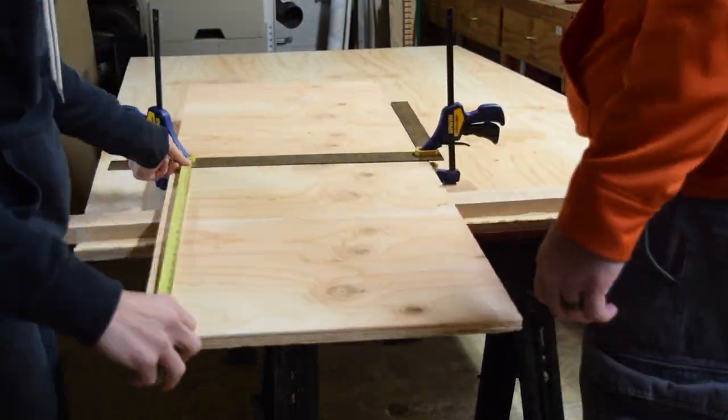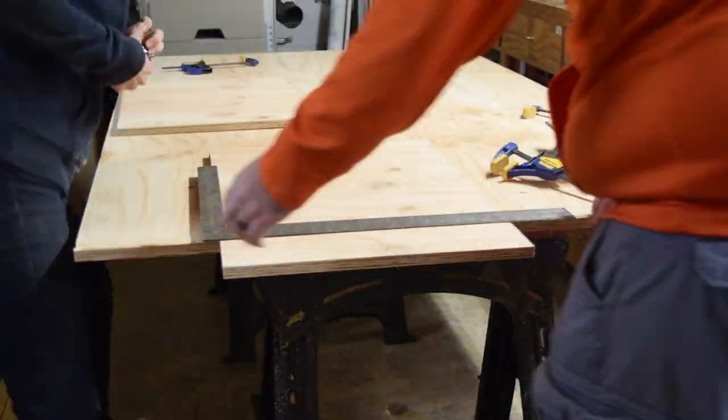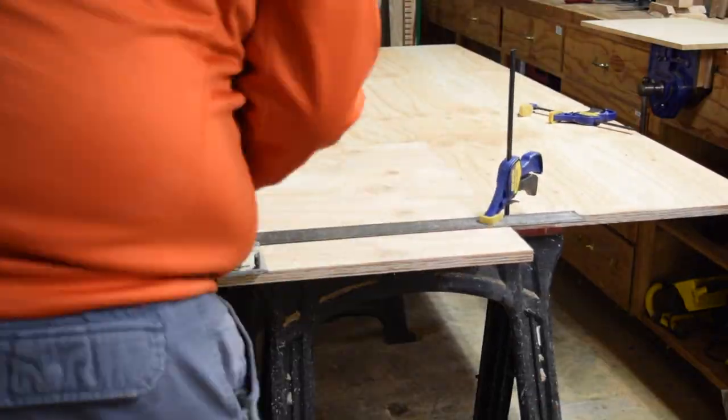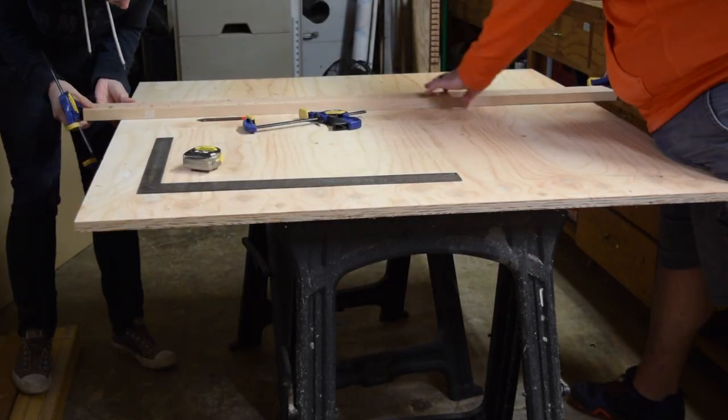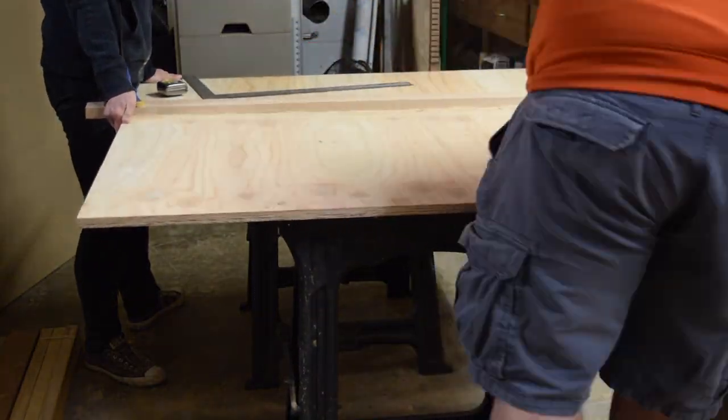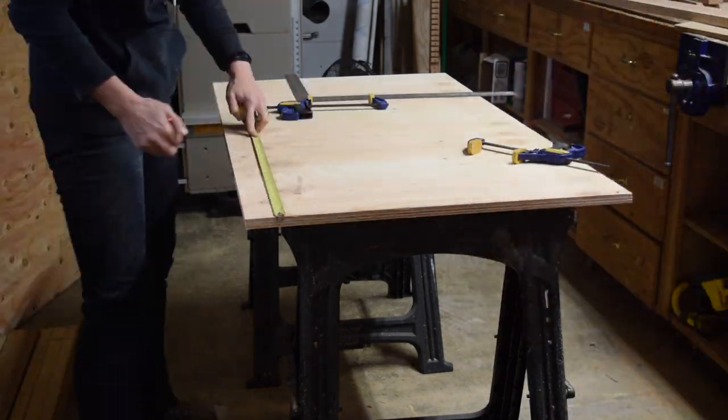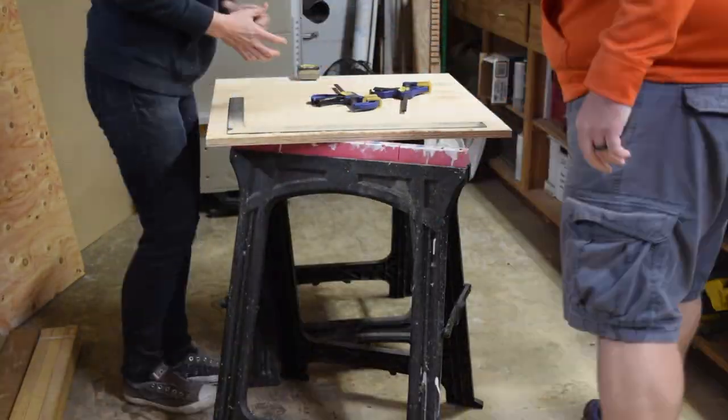The dimensions for the cuts were found on the Art of Manliness' website. The link is in the description below. Using a circular saw, we cut down a full sheet of three-quarter inch plywood into the six sides that we needed. We made sure to measure a lot so we didn't have fit issues later.